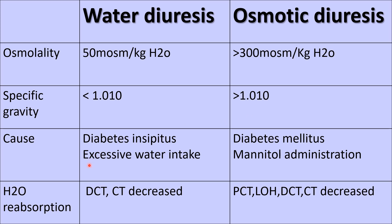Water diuresis is mainly due to excessive water intake and deficiency of antidiuretic hormone, which is called diabetes insipidus. Osmotic diuresis mainly occurs in diabetes mellitus.